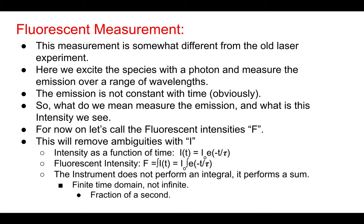For the old laser experiment, we measured at a given wavelength for a given time and had some exponential decay. Basically, what the fluorescence instrument is doing is sitting at a given wavelength and doing a finite sum of all the photons coming out of the system at the corresponding wavelength for a given time. It's analogous to integrating the intensity over time — and that's your fluorescence intensity. So the fluorescence intensity is analogous to the time integral of the intensity.